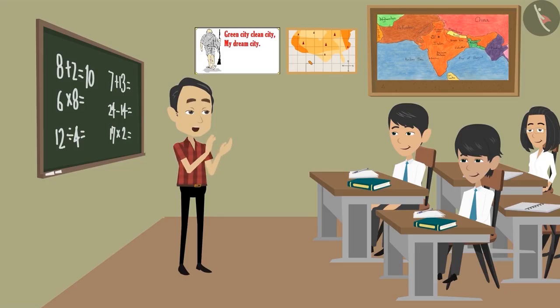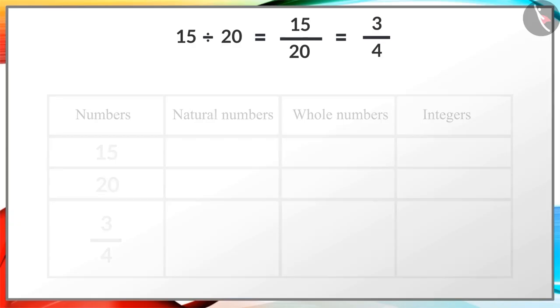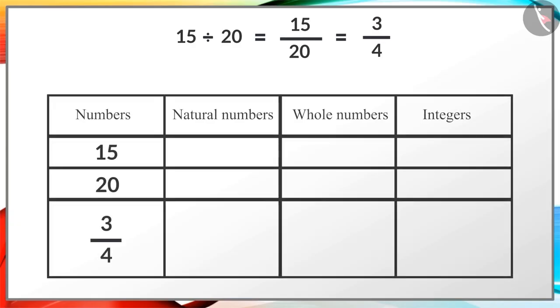Well done, Rahul. Children, now look at this table. You all know that 15 and 20 are natural numbers, whole numbers, and integers, but 3 by 4 is neither a natural number, a whole number, nor an integer.